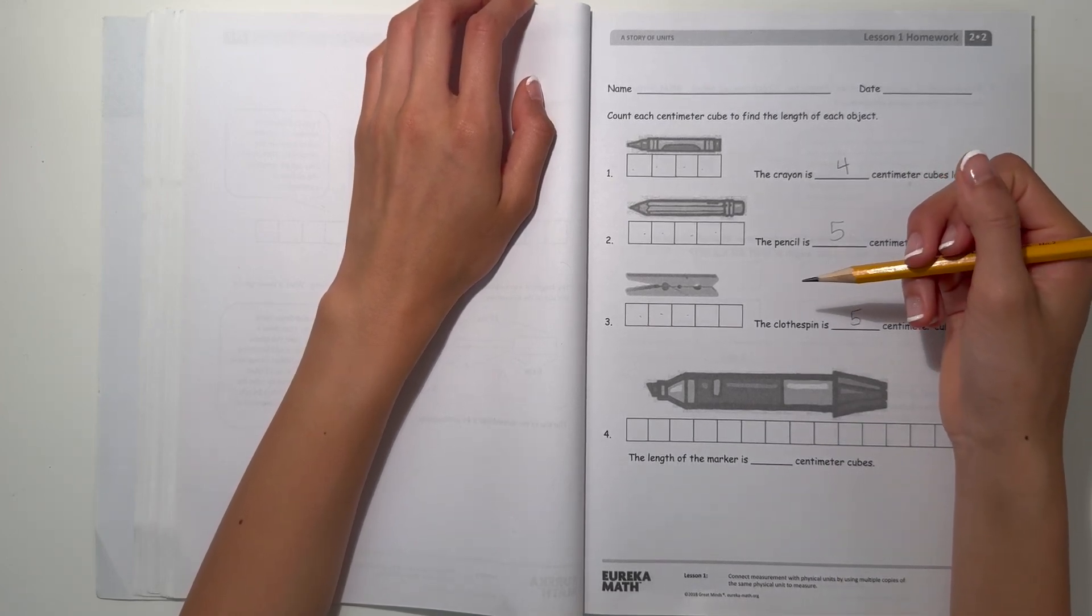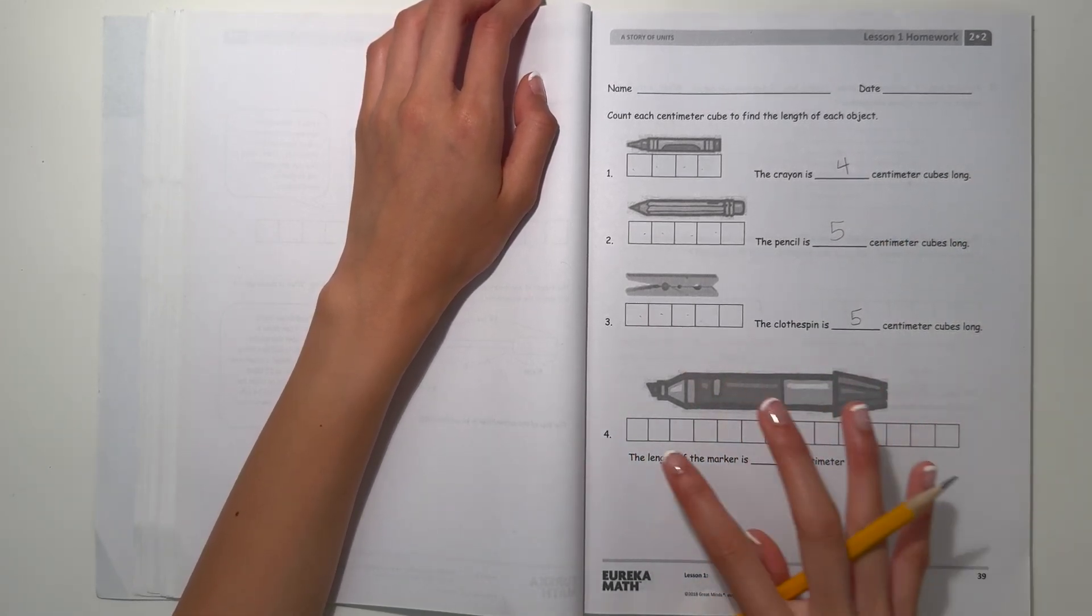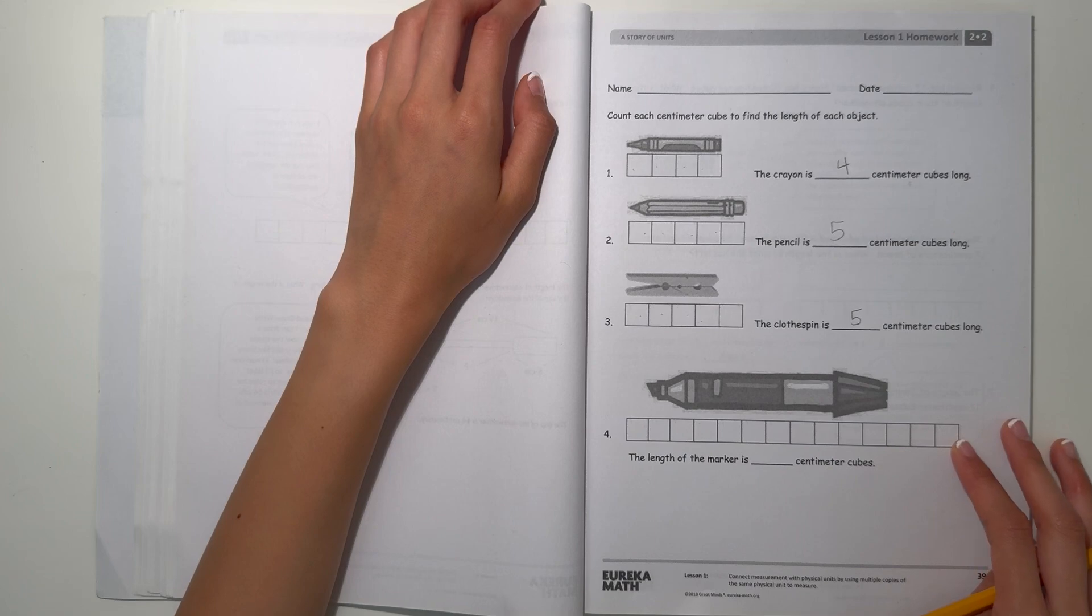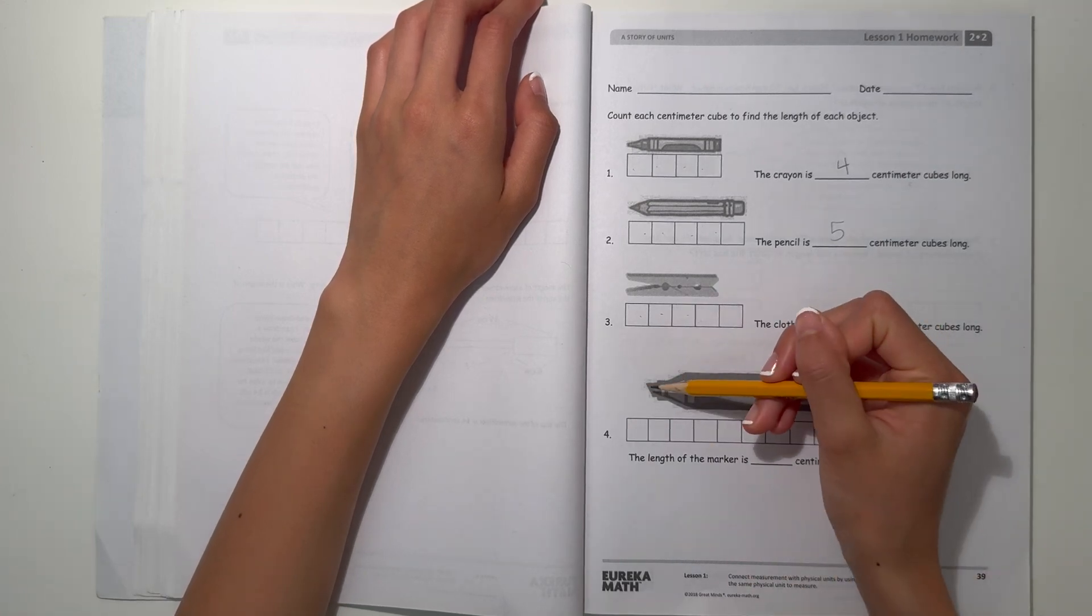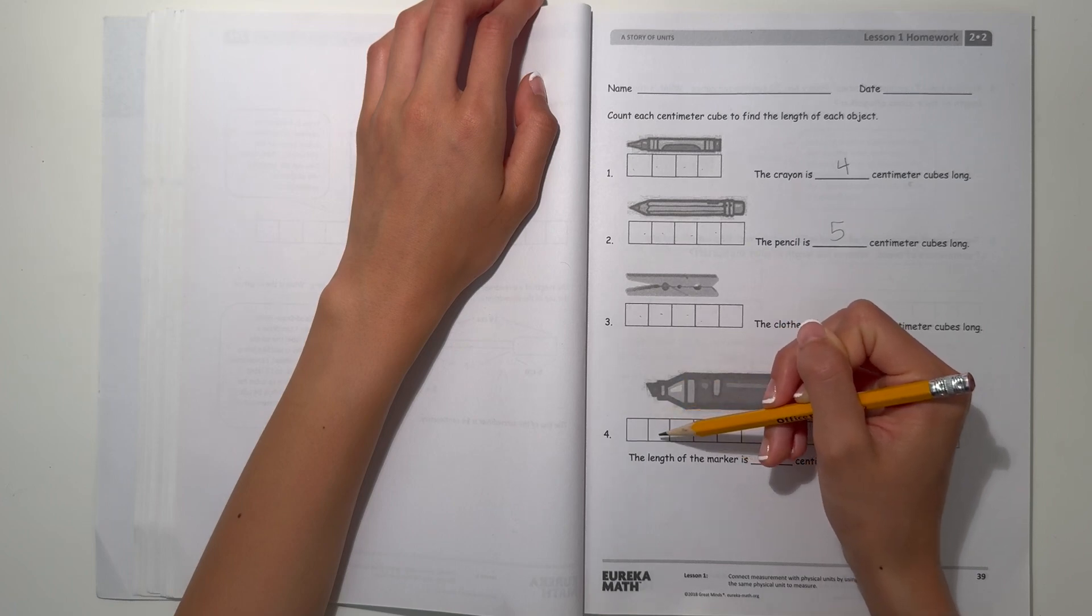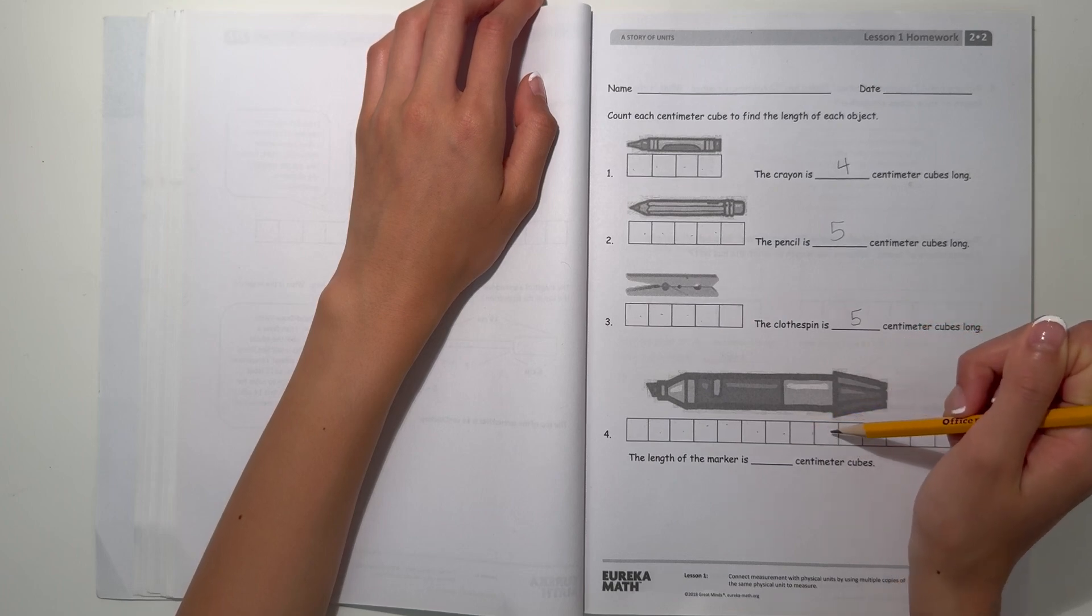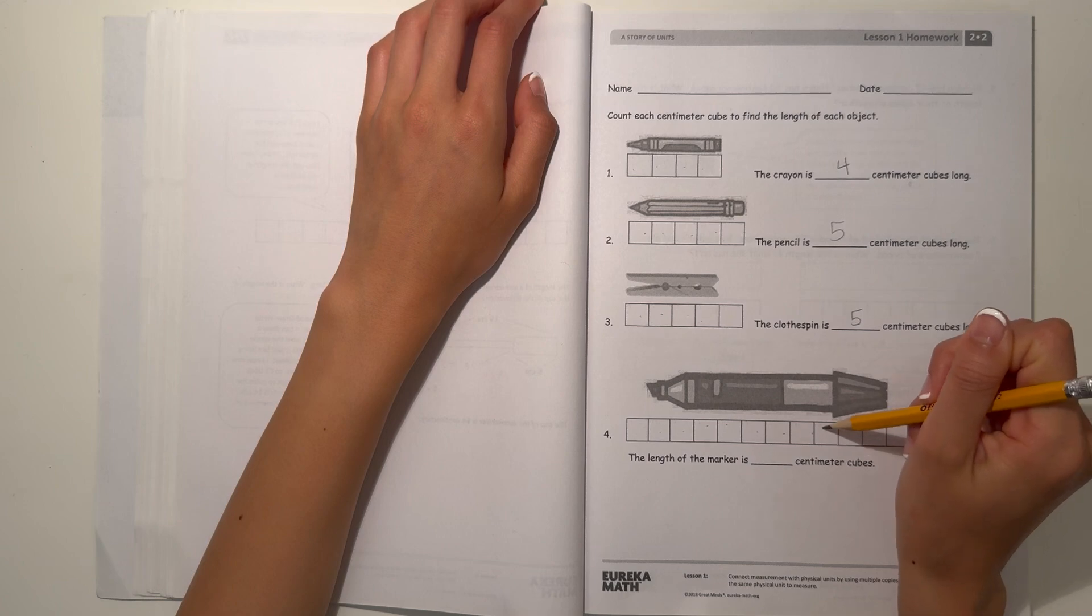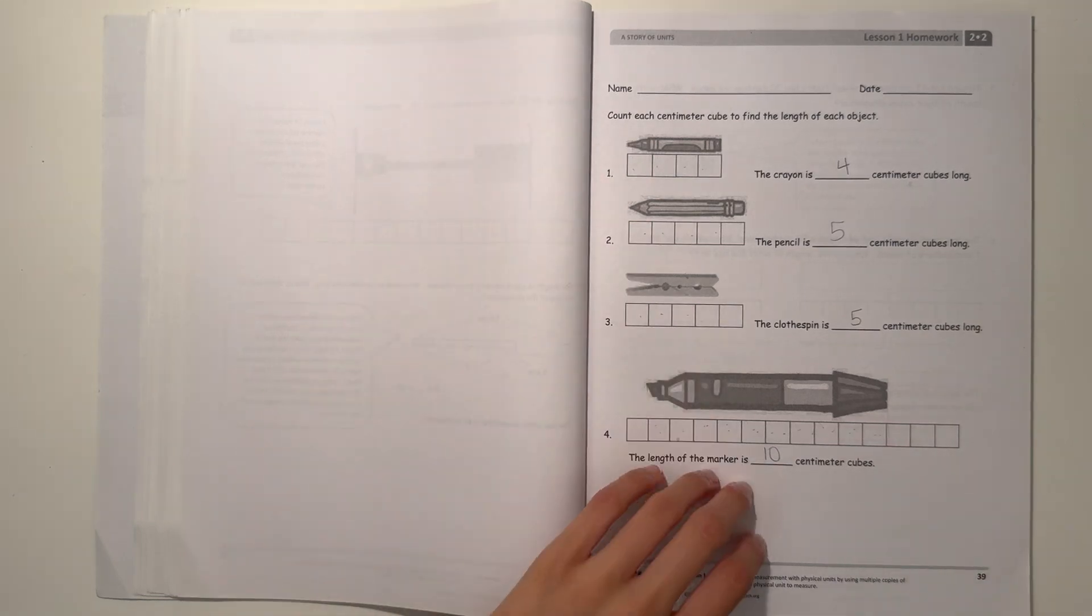Number 4, the length of the marker. Be careful - we're not counting all the cubes shown, but finding how many centimeter cubes the marker takes up. We line it up where it starts and count 1, 2, 3, 4, 5, 6, 7, 8, 9, 10 to where it ends. The length of the marker is 10 centimeter cubes.